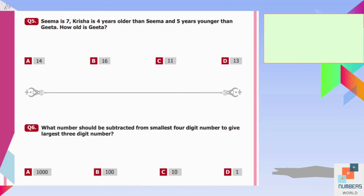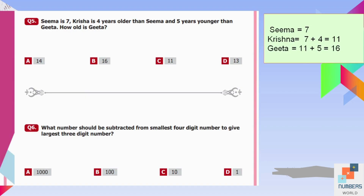Question number five: Sima is 7, Krishna is four years older than Sima, and five years younger than Gita. How old is Gita? Sima is 7, so Krishna is 7 plus 4 equals 11. Krishna is five years younger than Gita, so Gita is 11 plus 5 equals 16. B is our answer.